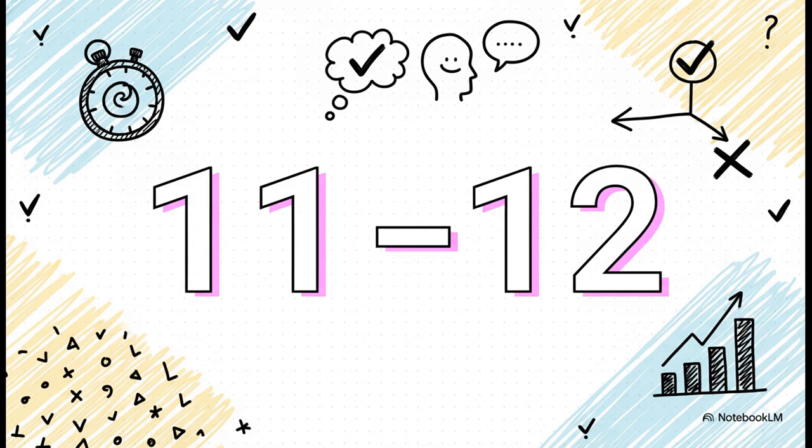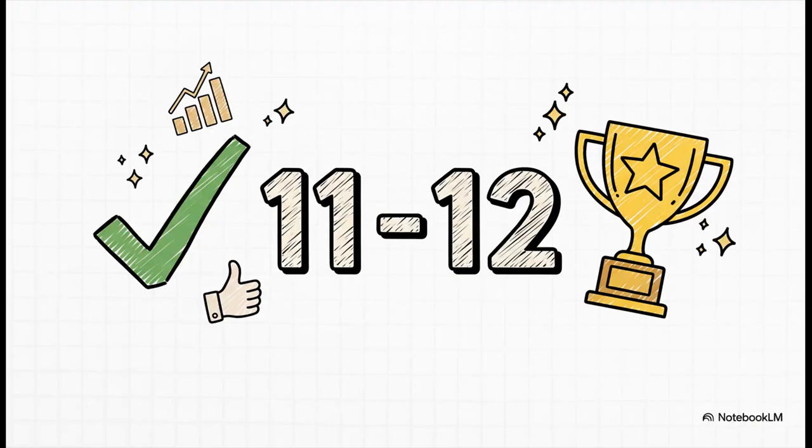The goal isn't to be a hero and attempt all 22 questions. The goal is to correctly and confidently solve just 11 or 12 of them. And honestly, based on a ton of experience, if you can nail 11 or 12 questions correctly in the quant section, you are in an absolutely fantastic position for a top-tier score. It really is all about quality over quantity.